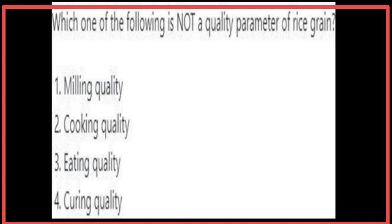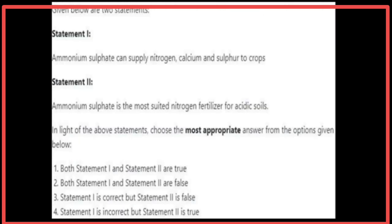Given below are two statements. Statement 1: Ammonium sulfate can supply nitrogen, calcium, and sulfur to crops — Statement 1 is false. Statement 2: Ammonium sulfate is the more suited nitrogen fertilizer for acidic soils — Statement 2 is false. The most appropriate answer is Statement 1 and Statement 2 are false.